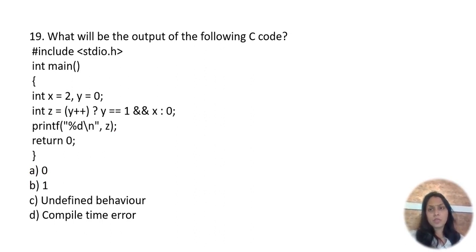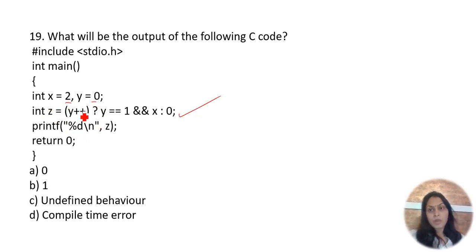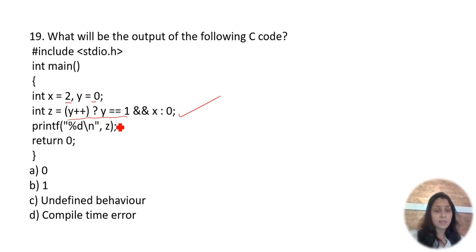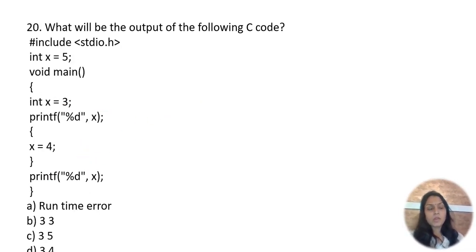What will be the output? int x=2, y=0. The ternary operator is used. Since y++ is evaluated (y becomes 1 after the condition), but the false branch value zero is taken and printed. The compiler prints zero — option D is correct.